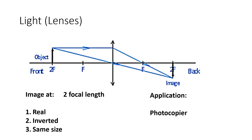For the last diagram, place the object exactly on two focal length. Draw the horizontal line through one F — it should coincide with the line through the center directly at two F. Again, image and object are on opposite sides of the lens, so it is real and inverted. Because both are exactly at two F and the same height, they are the same size. Application: photocopier — the old-style photocopier that copies at the same size.